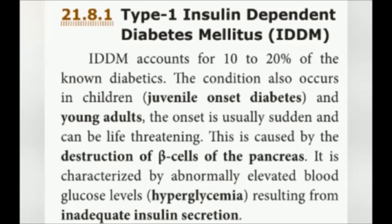Next, diseases and disorders due to lifestyle modification. First, Diabetes Mellitus. It is a chronic metabolic disorder. In Greek, the word diabetes means running through and mellitus means sweet. It is characterized by increased blood sugar level due to insufficient, deficient, or failure of insulin secretion. There are two types of diabetes.